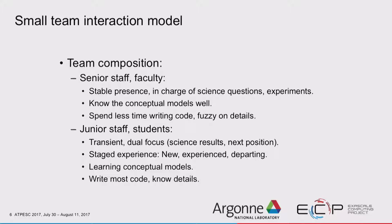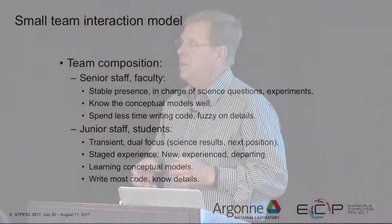What's the typical small team composition? You have a senior staff or faculty member — a stable presence, there for the long haul, your mentor. Then you have junior people coming and going, usually postdocs or students. They are transient. The faculty member's key objective is making the project successful, while also advancing their career. Students have two objectives: contributing to the project, and getting out in a finite amount of time. That dual objective is really important as part of the model.